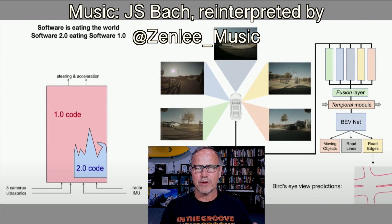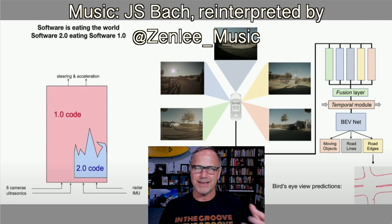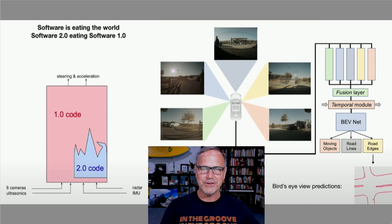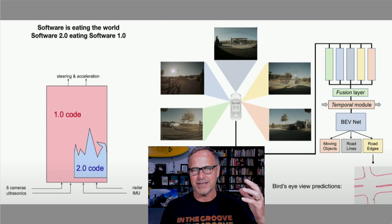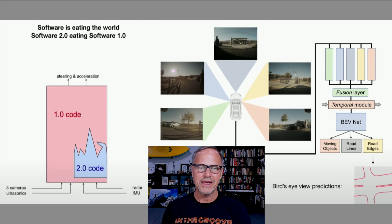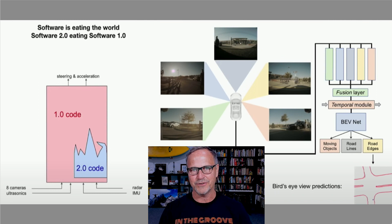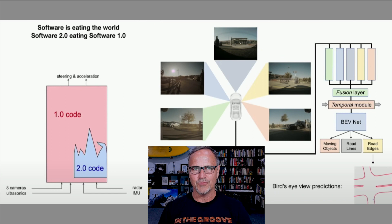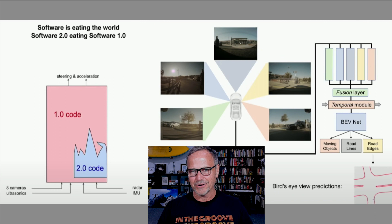On the left-hand side, the 1.0 code was what was called heuristic code, which was basically a bunch of if-then statements in C++ and also in C. They kind of said, if you see a shape like this, it's likely a stop sign, so do something like this. The 2.0 code — and this is from a couple of years ago, so it's actually quite different now, with very little 1.0 code left — is more of deep neural networks, convolutional neural networks, transformers, things like that, taking over the way that full self-driving is operating.